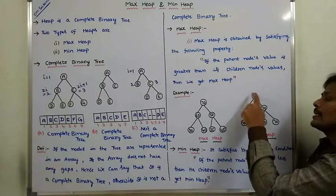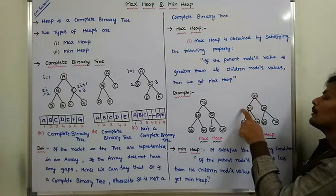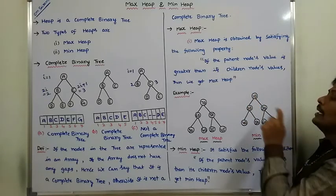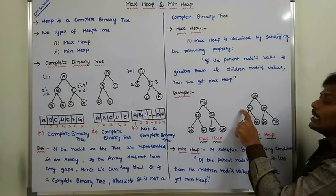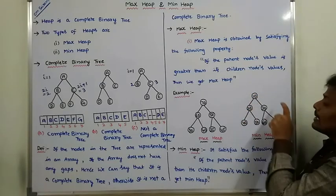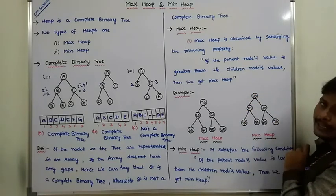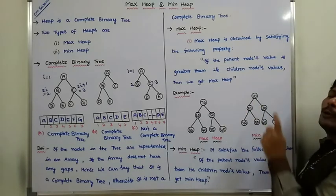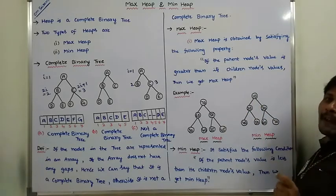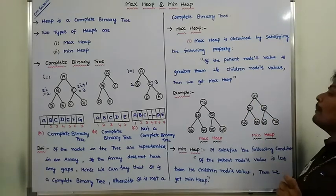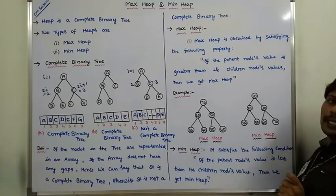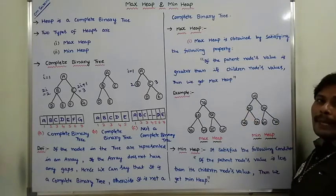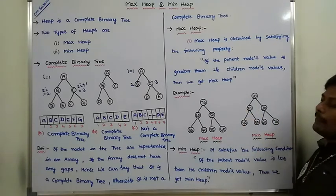Consider the root node 10. Its children are 20 and 30. 10 is less than 20, and 10 is less than 30. All the parent nodes satisfy the minimum heap property, hence we can say that it is a minimum heap.